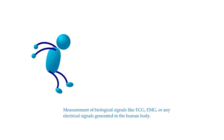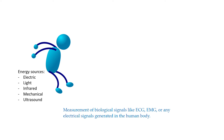Any medical instrument consists of the following functional basic parts. The first one is called energy sources. Sometimes we will need to measure an energy source. This energy source comes sometimes from electrical signals, sometimes there's light, infrared signals, mechanical vibrations, for instance, or ultrasound.